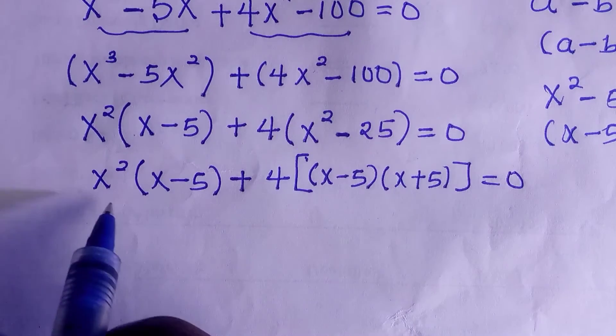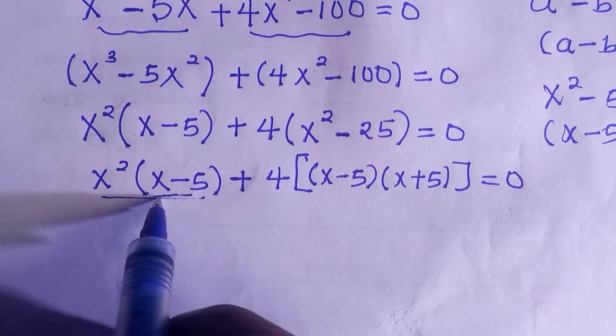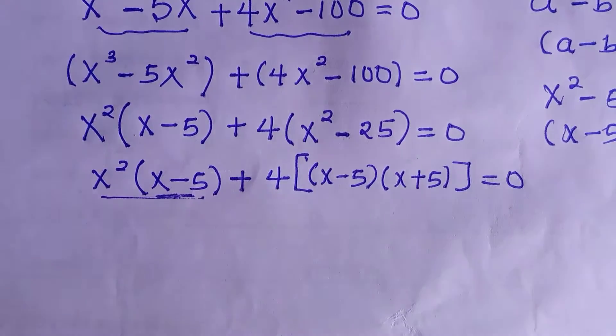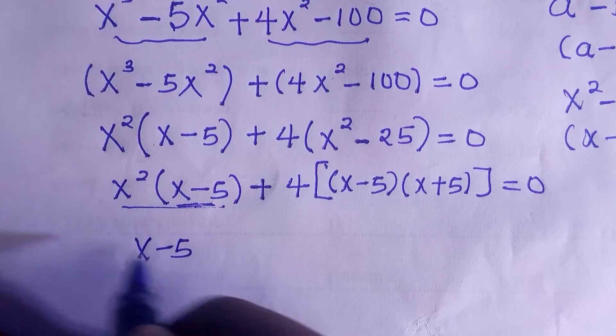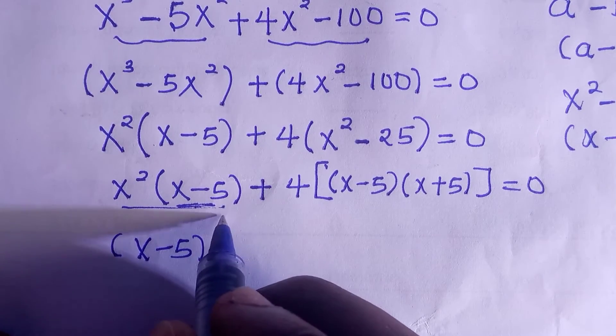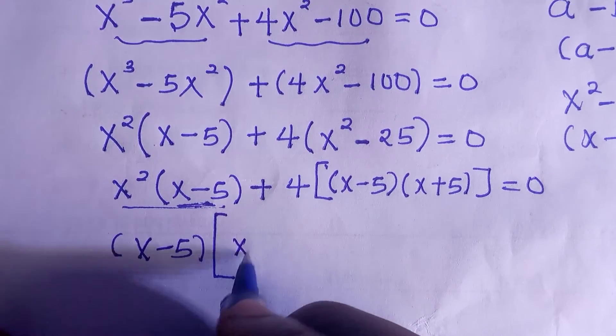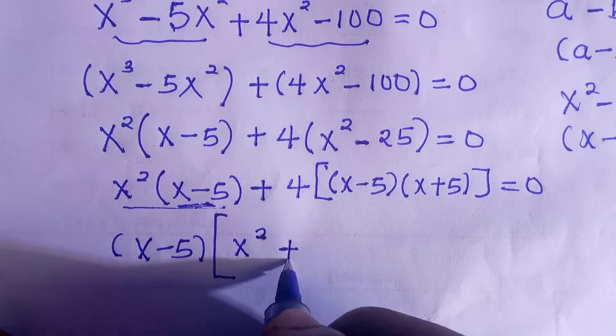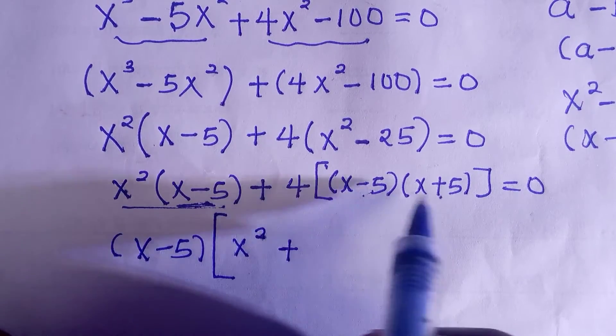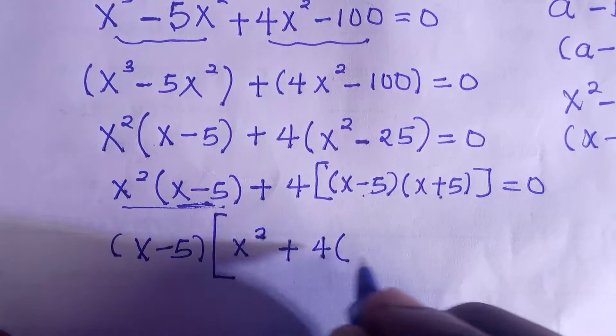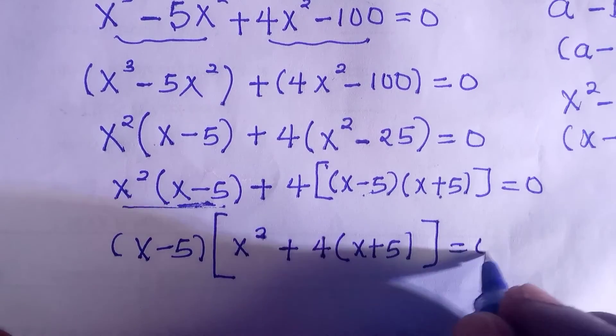And if you consider these two different brackets, we see that we have something common to them. By taking out the common factors from both, we have x minus 5 common to both. We create a bracket and another larger bracket. So we have x raised to the power of 2 left, and for this here we have plus 4 and x plus 5 will be left here. Since we have taken out x minus 5, then we have 4 bracket x plus 5 bracket equals to 0.